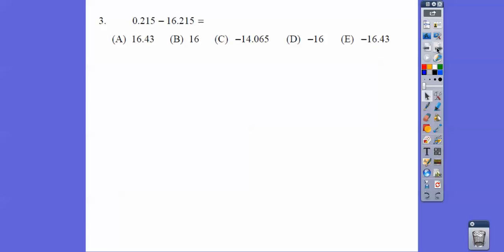When you're subtracting a smaller number minus a bigger number, you can subtract the bigger minus the smaller. Just know it's going to be a negative. So choice D right there, as long as you line up the decimals.